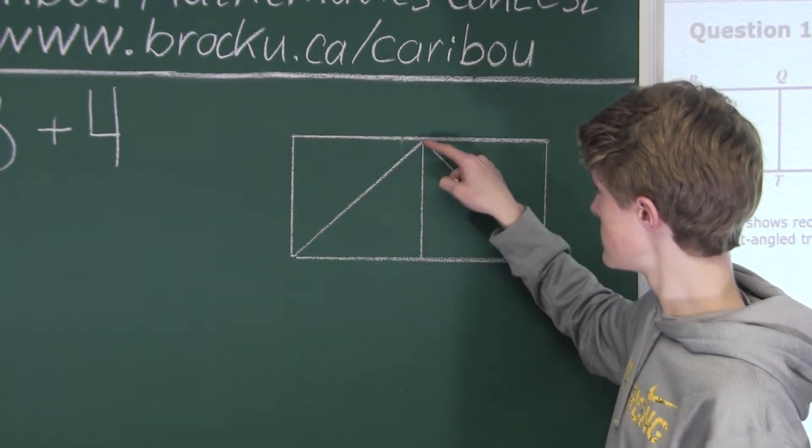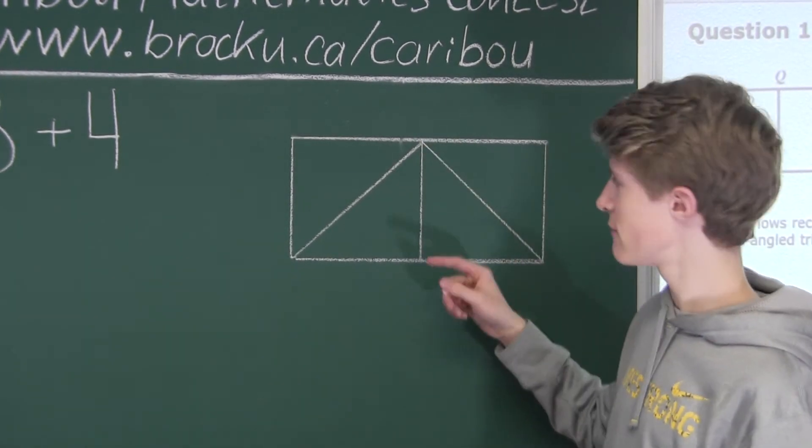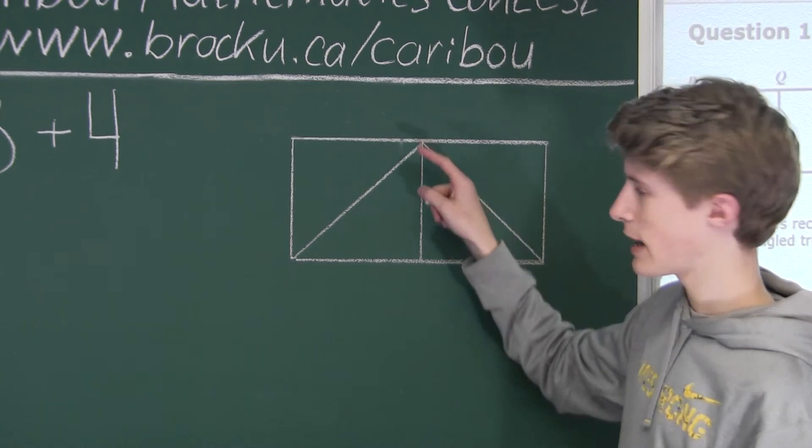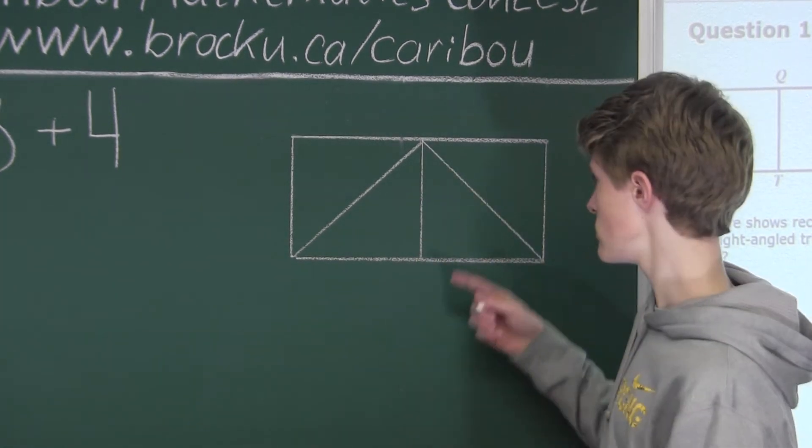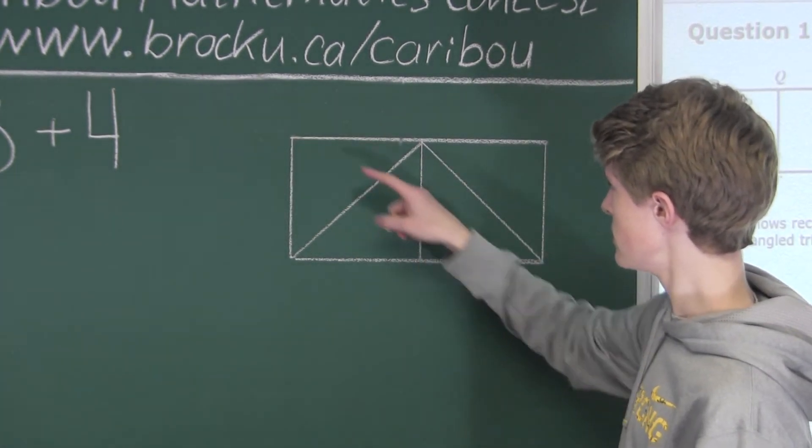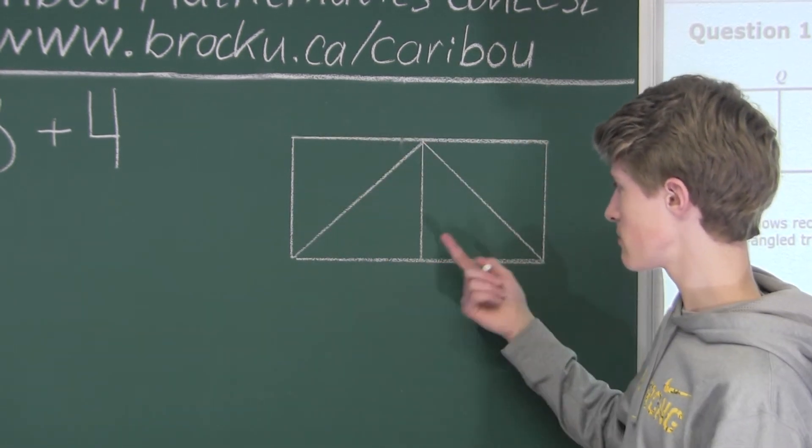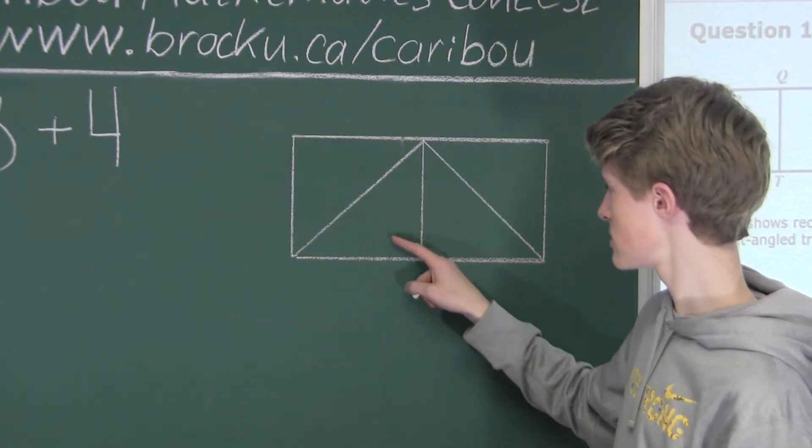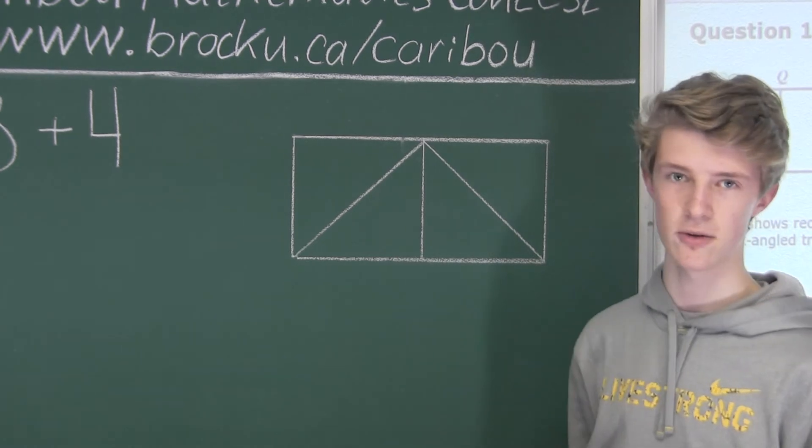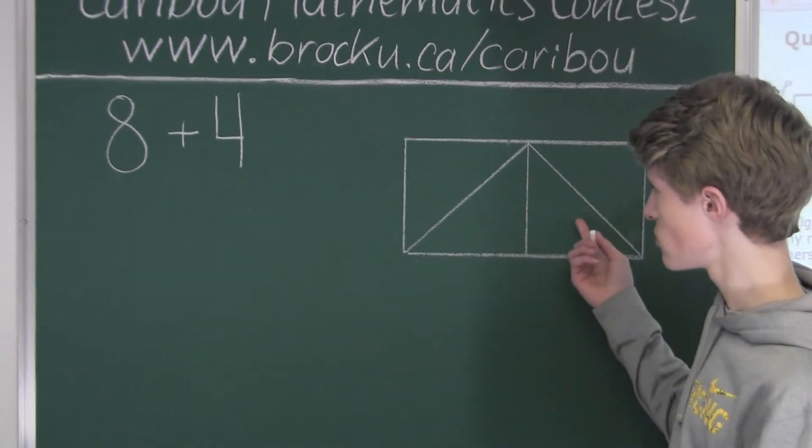And of course, we know that that is on the flip side, so for here, that would be the right-angled triangle, because we know, of course, this would be the right angle. So we have an additional two.